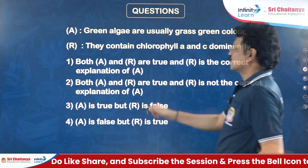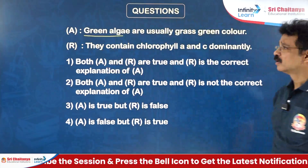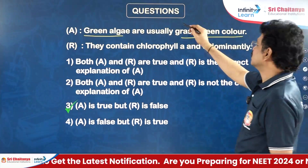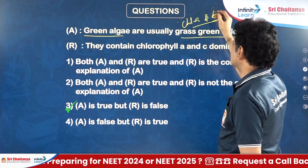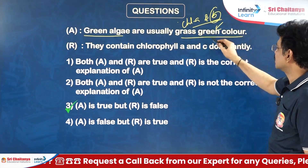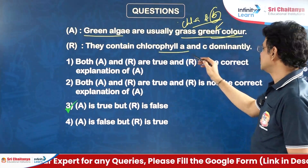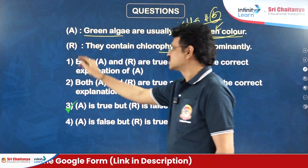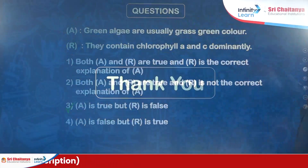Final question: Chlorophyta (green algae) are usually grass-green in color. Reason: They contain pigments chlorophyll A and B as in higher plants — especially chlorophyll B causes the grass-green color of green algae. Both assertion and reason are true and reason is the correct explanation — first option. Thank you.